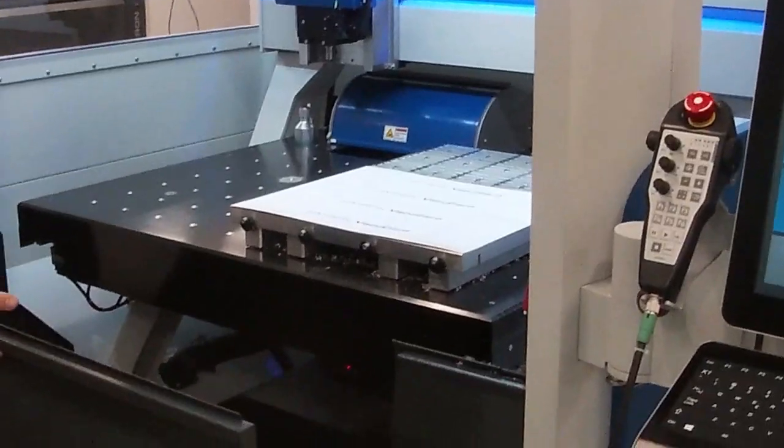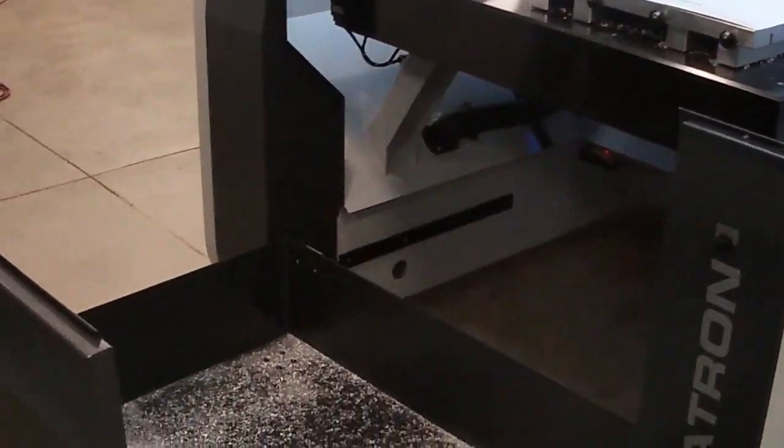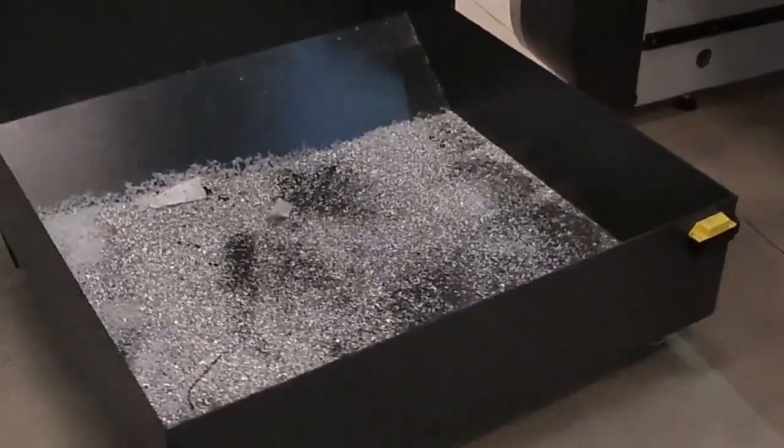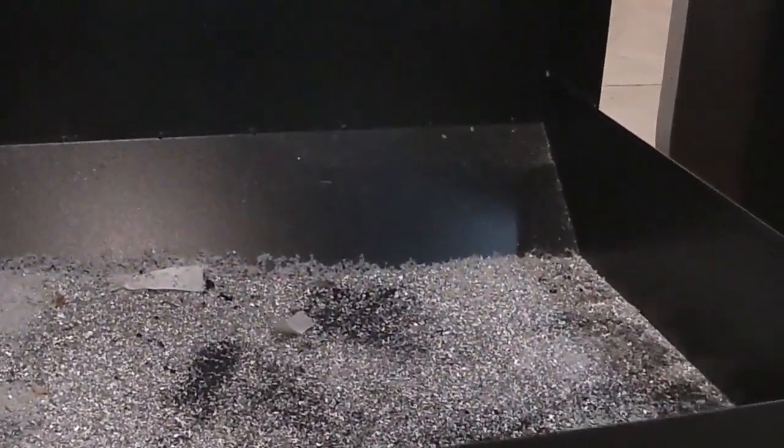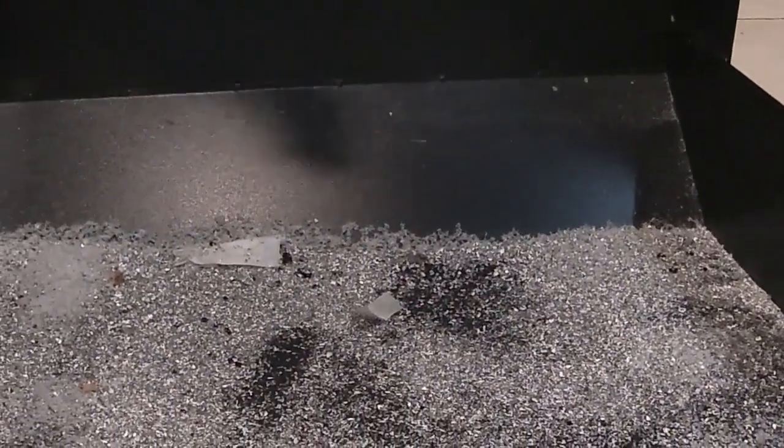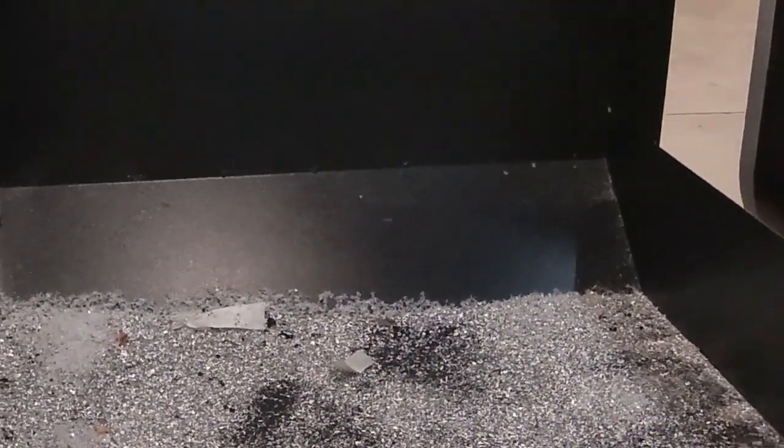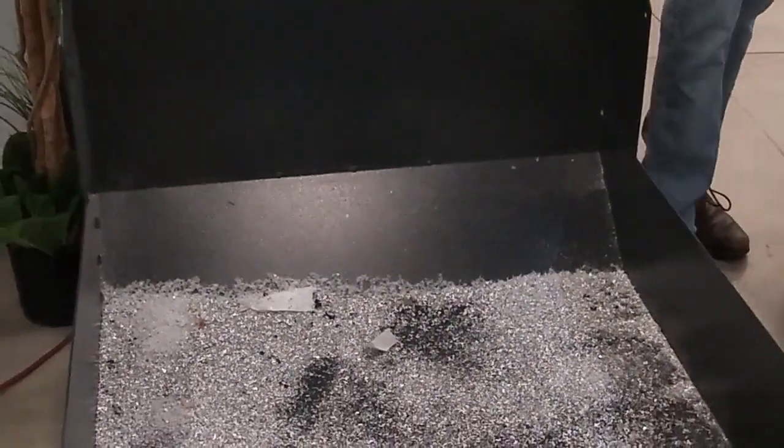They all scatter off to the side and are tapered down into the chip tray, which pulls straight out. When we pull this out, you can see everything accumulates down here, and we can easily clean it up with a vacuum or dust pan.